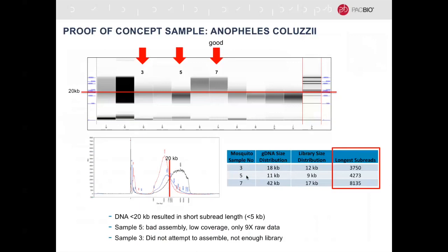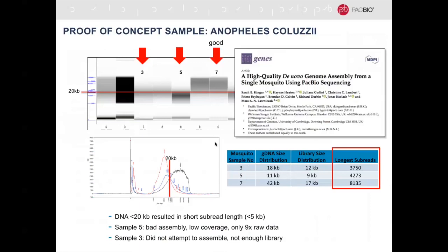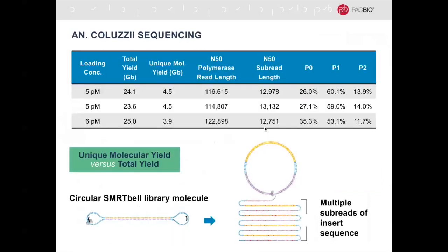We selected samples five and seven for additional sequencing. Sample three didn't have enough material for additional cells. For sample five, we sequenced three cells total but only had nine-fold coverage of the genome, so we weren't able to continue with that sample for assembly. We focused on sample number seven, and this has been published in Genes earlier this year. If you want to read more details, there's the publication.